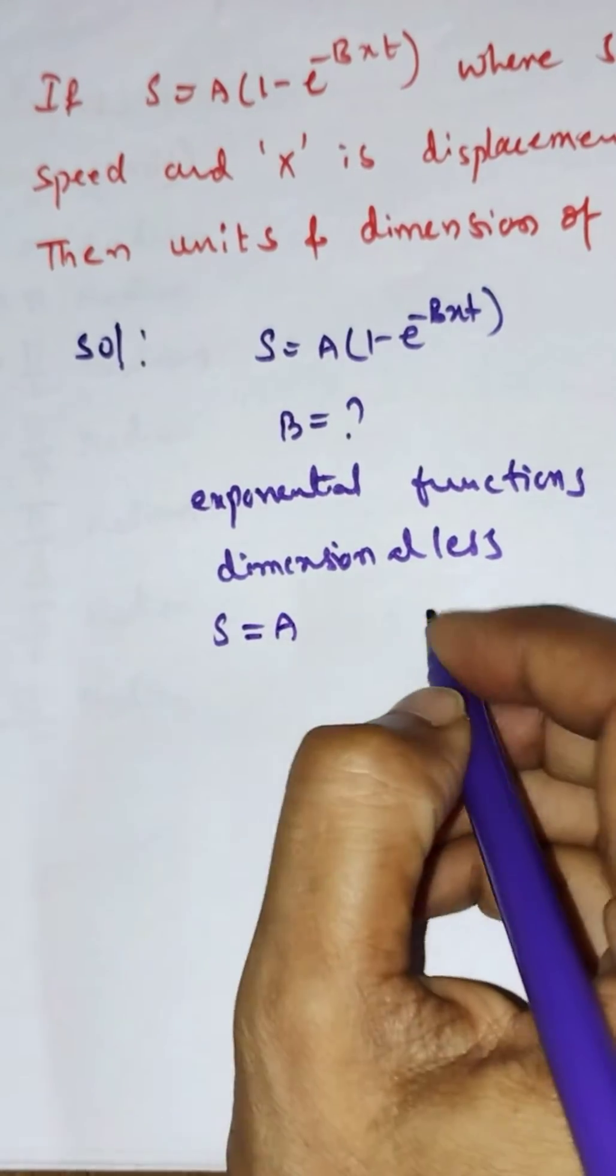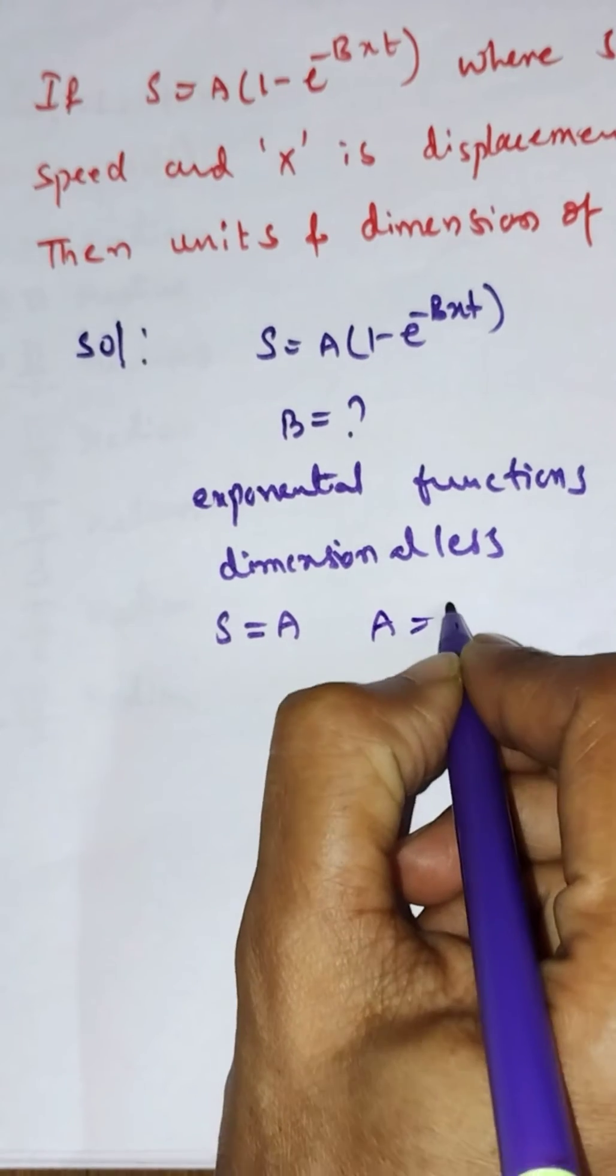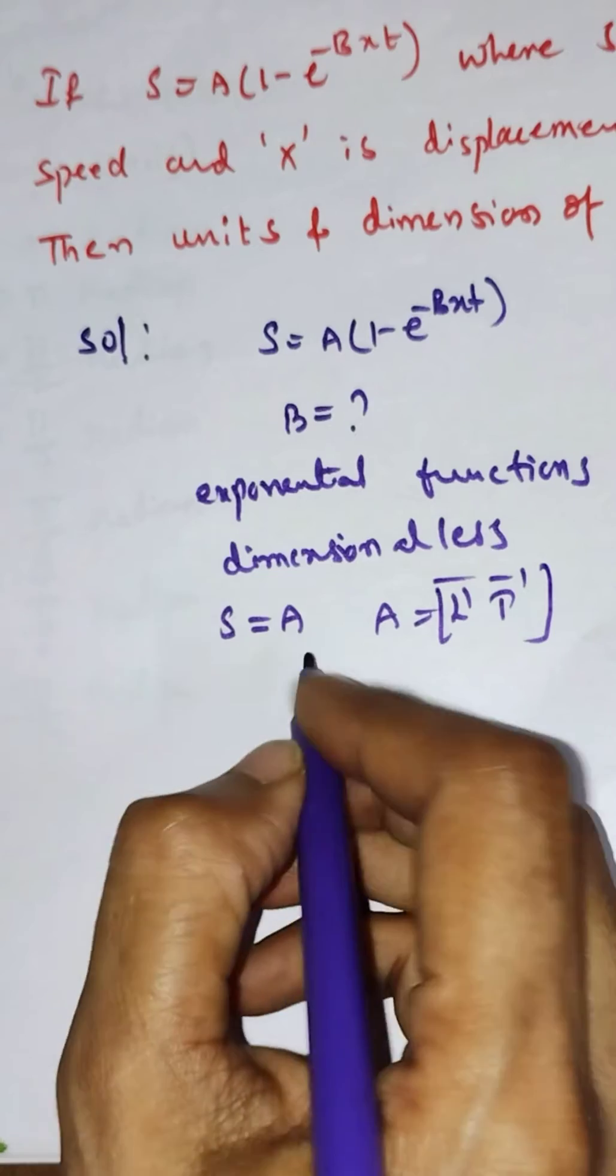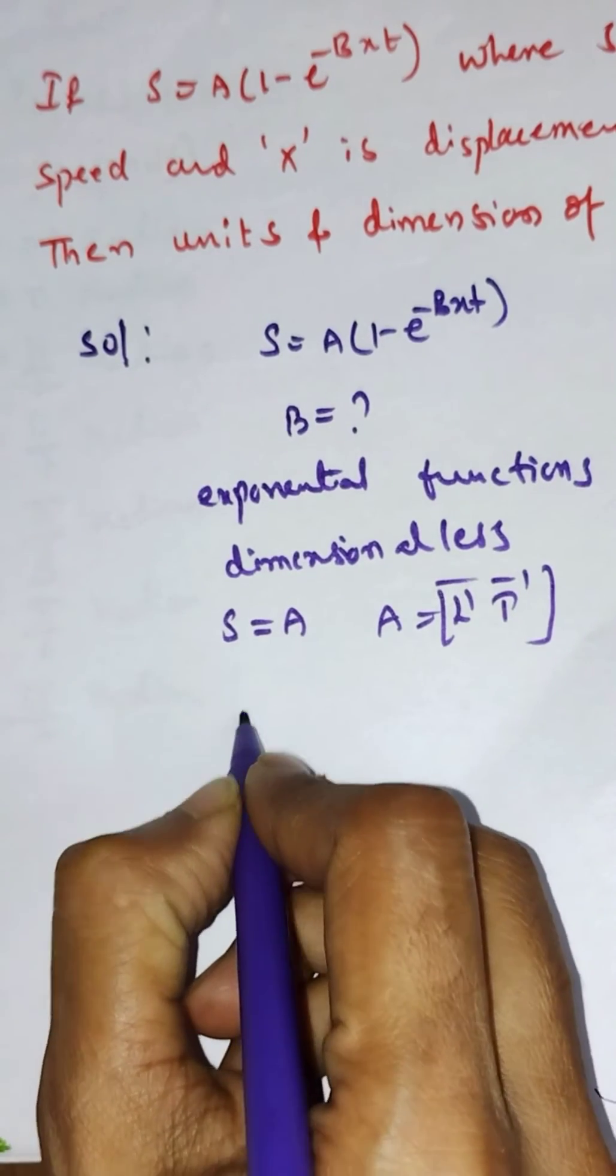Here I am writing the dimensions. Since S equals A, and S equals speed, A has dimensions [L^1 T^-1].